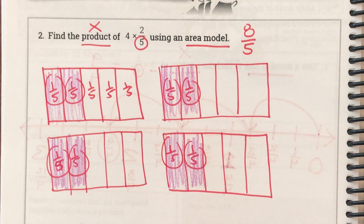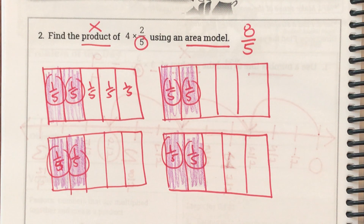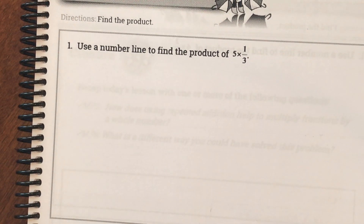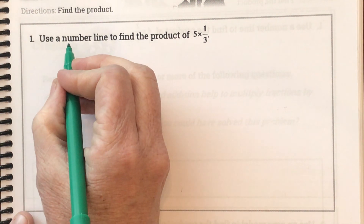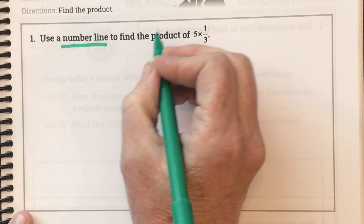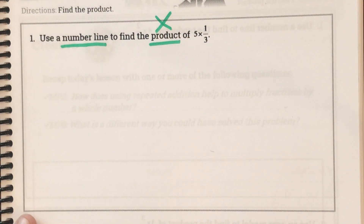Let's try some of these together. Notice that I had to go get a crayon — you might want to pause the video to get something to shade with too, like a light-colored crayon, a pencil, or a highlighter. When you're ready, we're on page 190. Here's our first problem: use a number line to find the product of five times one-third. Product tells us we're multiplying.